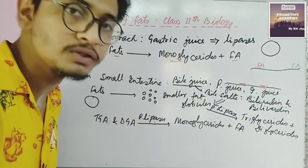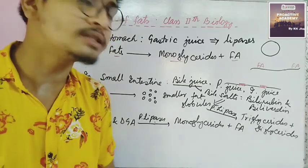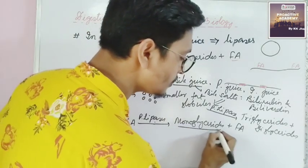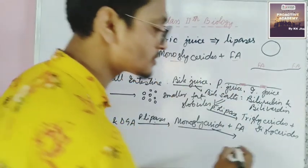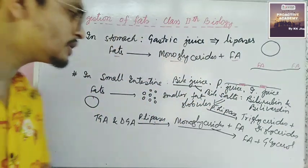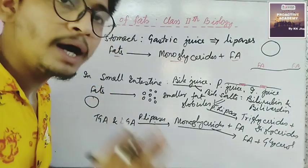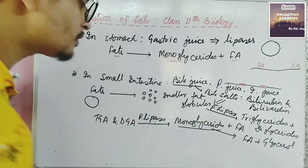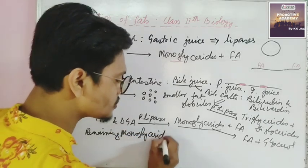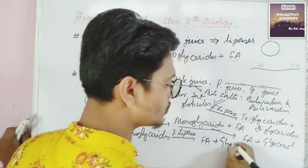Slowly this breakdown is happening — that is the digestion process. The monoglycerides are further broken down. The ultimate products of fat digestion are fatty acids and glycerol. So pancreatic lipase breaks monoglycerides into fatty acids and glycerol. But not all monoglycerides are completely digested; the remaining monoglycerides are acted upon by intestinal lipase, which breaks them down into fatty acids and glycerol.